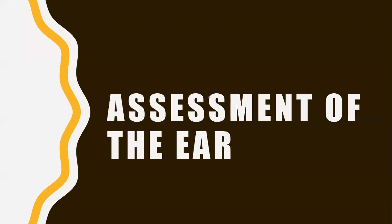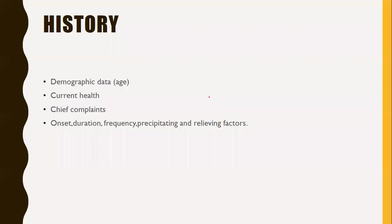Next is the assessment of the ear. We have been discussing the structural and functional aspects of the ear. Now we will discuss how to assess a patient with a complaint of ear diseases. If a patient comes with complaints of ear problems, first you should collect a detailed history. From the history, you will get information regarding the chief complaint, clinical features, and etiological factors of the condition.